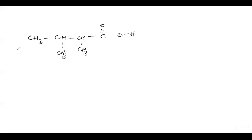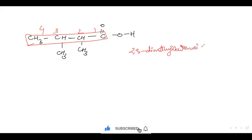If you name it, what will you have? Longest carbon chain will be coming. This will be one, two, three, four. This will become 2,3-dimethyl-butanoic acid.